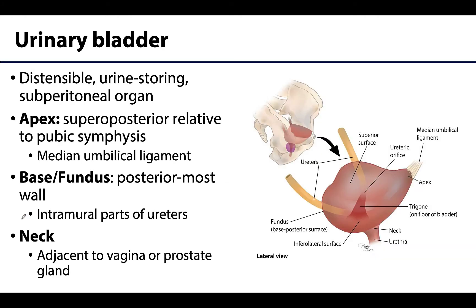Now let's move to the urinary bladder, which is located in the anterior portion of the pelvic cavity. Its size and shape will vary dependent on the amount of urine present as well as the state of neighboring viscera, so there is a lot of change that can occur. When the bladder is empty it lies completely within the lesser pelvis, but it can extend into the abdominal cavity as it expands.